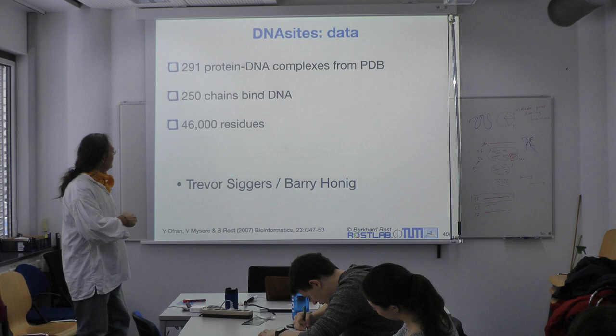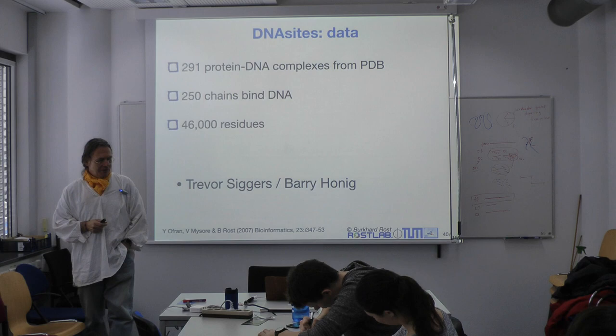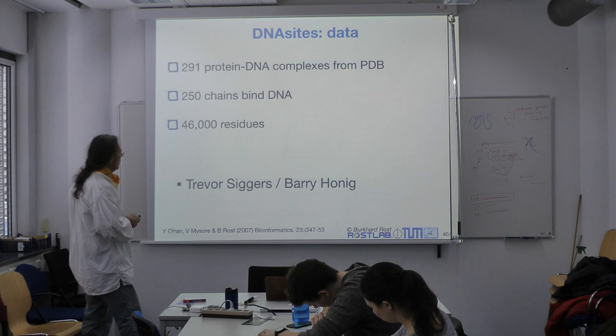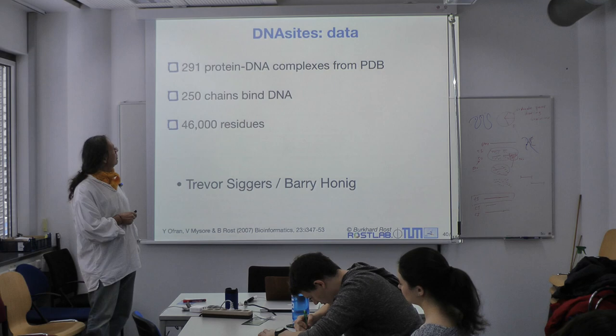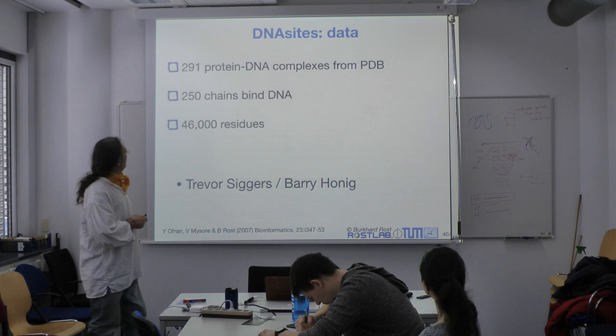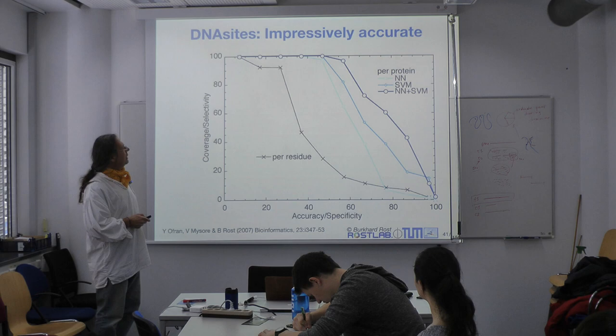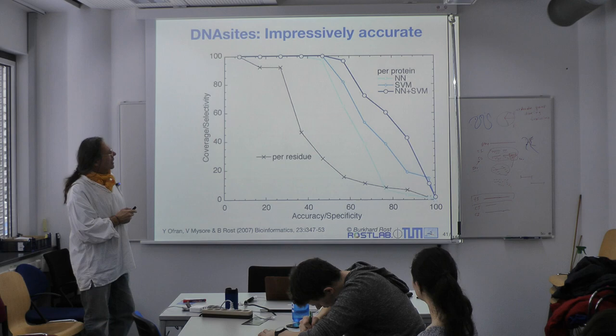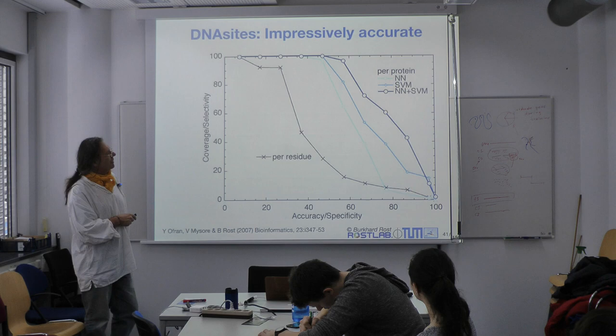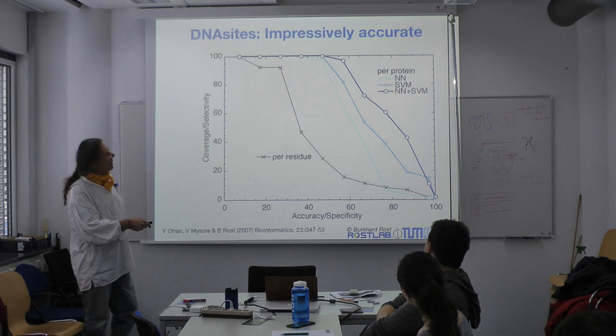Our understanding of the binding energy is much simpler for DNA than for proteins, because DNA is a relatively simple molecule. That is the work of Trevor Sigars with programs from Barry Honig's group, which gave us a dataset of about 250 chains binding DNA from 290 complexes. With this we got an immensely good method on a per-residue prediction accuracy. Per-protein accuracy is even more impressive. You see differentiation between a simple neural network, an SVM, and a combination of a neural network and an SVM.